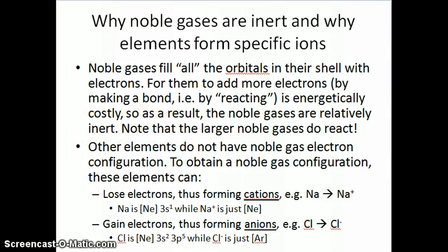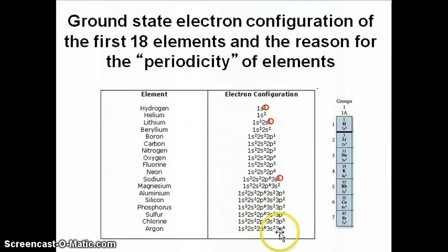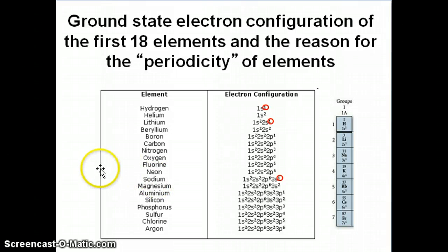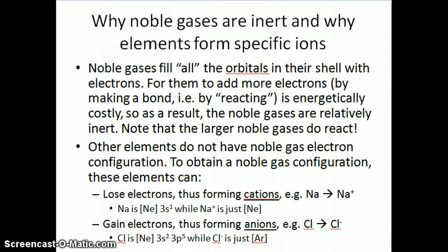I would mention, though — and we'll talk about this more when we discuss Lewis structures and compounds formed with noble gases — that larger noble gases do react. The reason has to do with that 3d orbital mentioned earlier. As you go higher, there are additional orbitals that are not filled even though they belong in that shell. For the larger noble gases, they haven't filled out the entire shell yet, so there's space for them to add electrons.